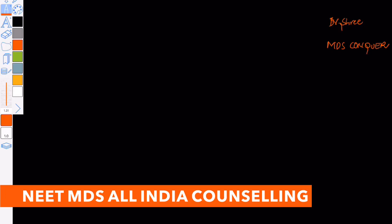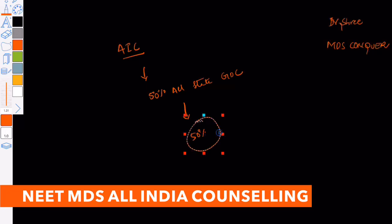There is something called All India Counselling, which includes the GDC seats — that is 50% of all state GDCs are included in this. All states, except Jammu and Kashmir, are going to donate their 50% of seats, meaning half-half seats. The 'half' here means in terms of depth.